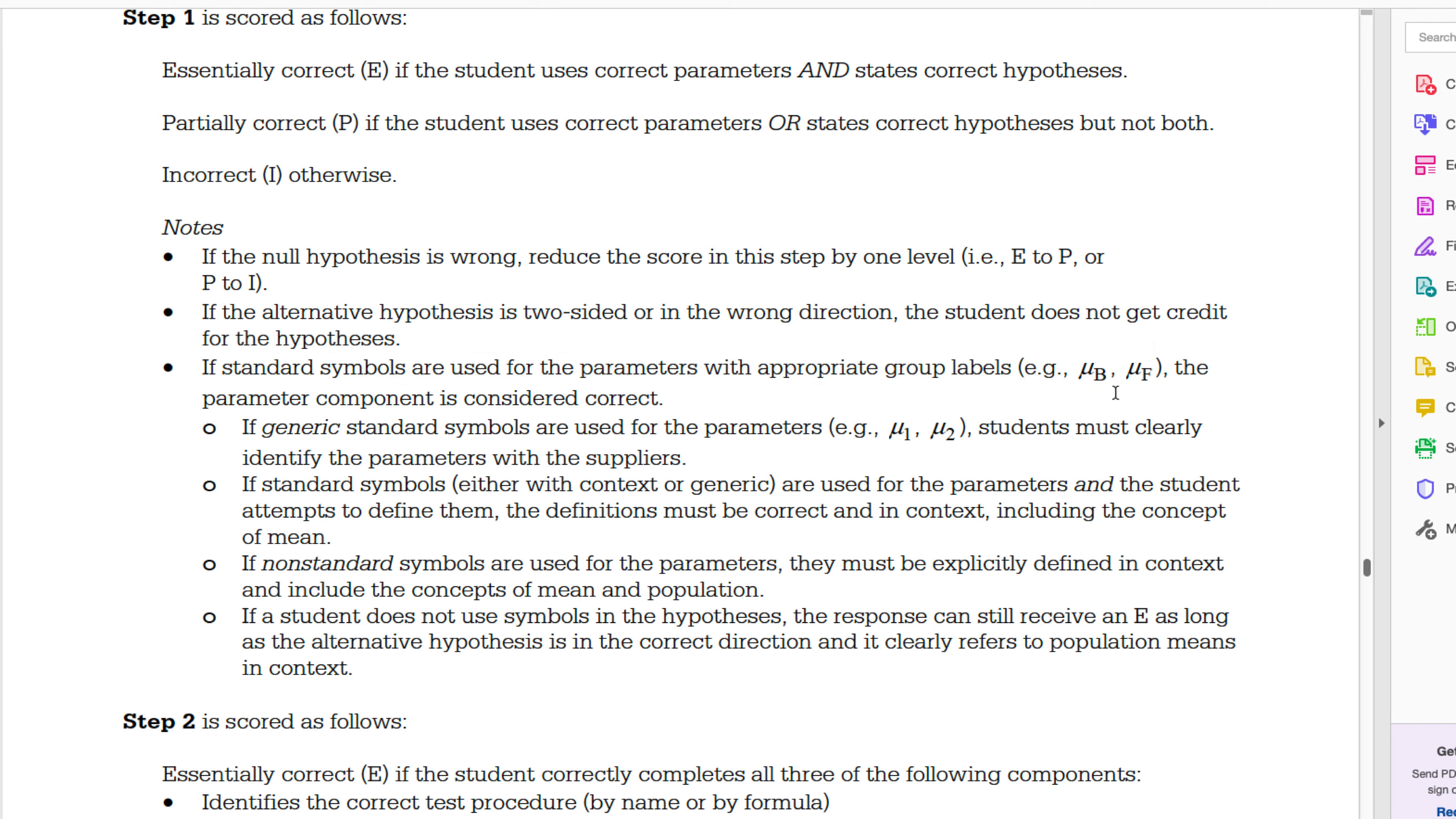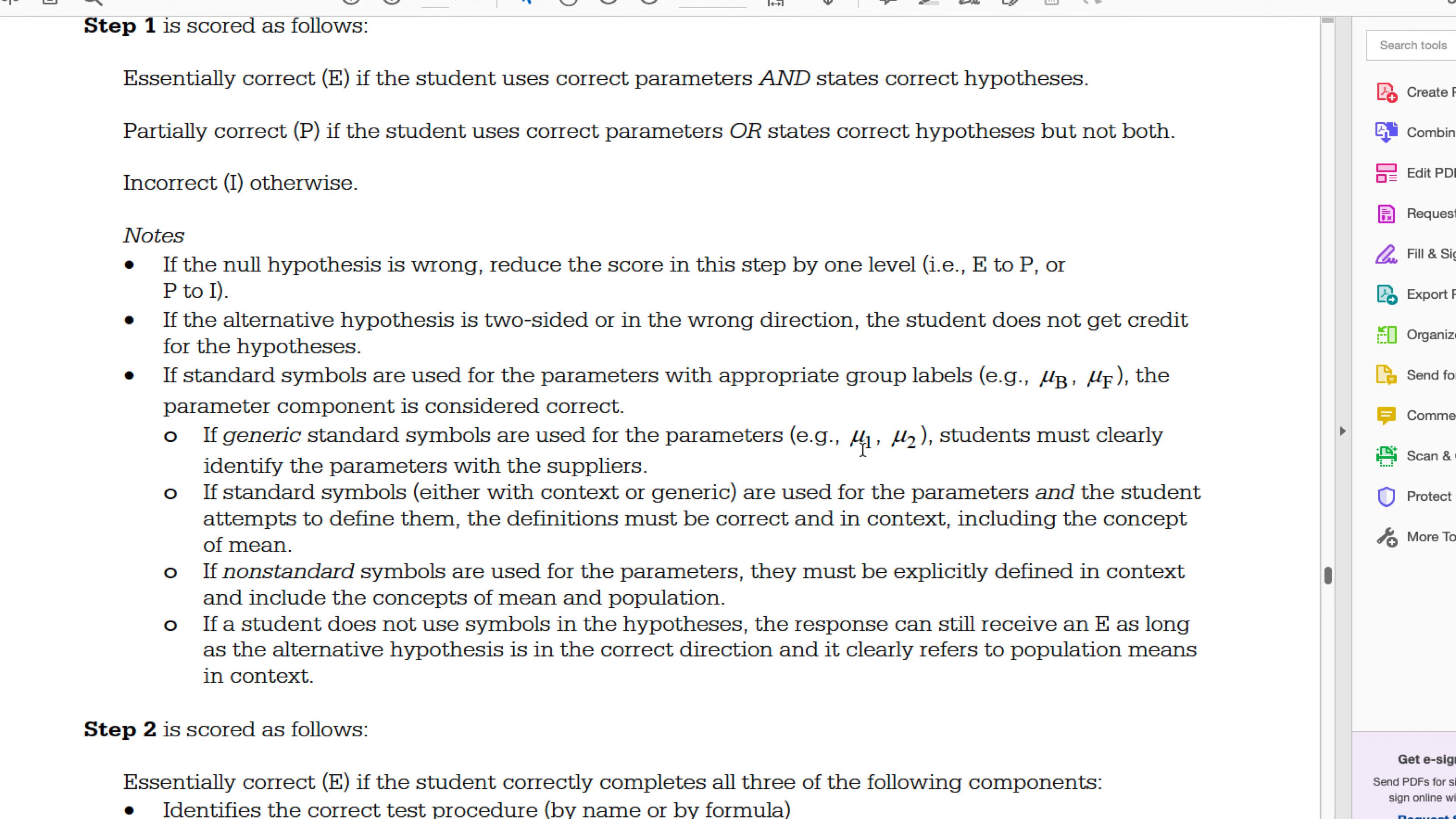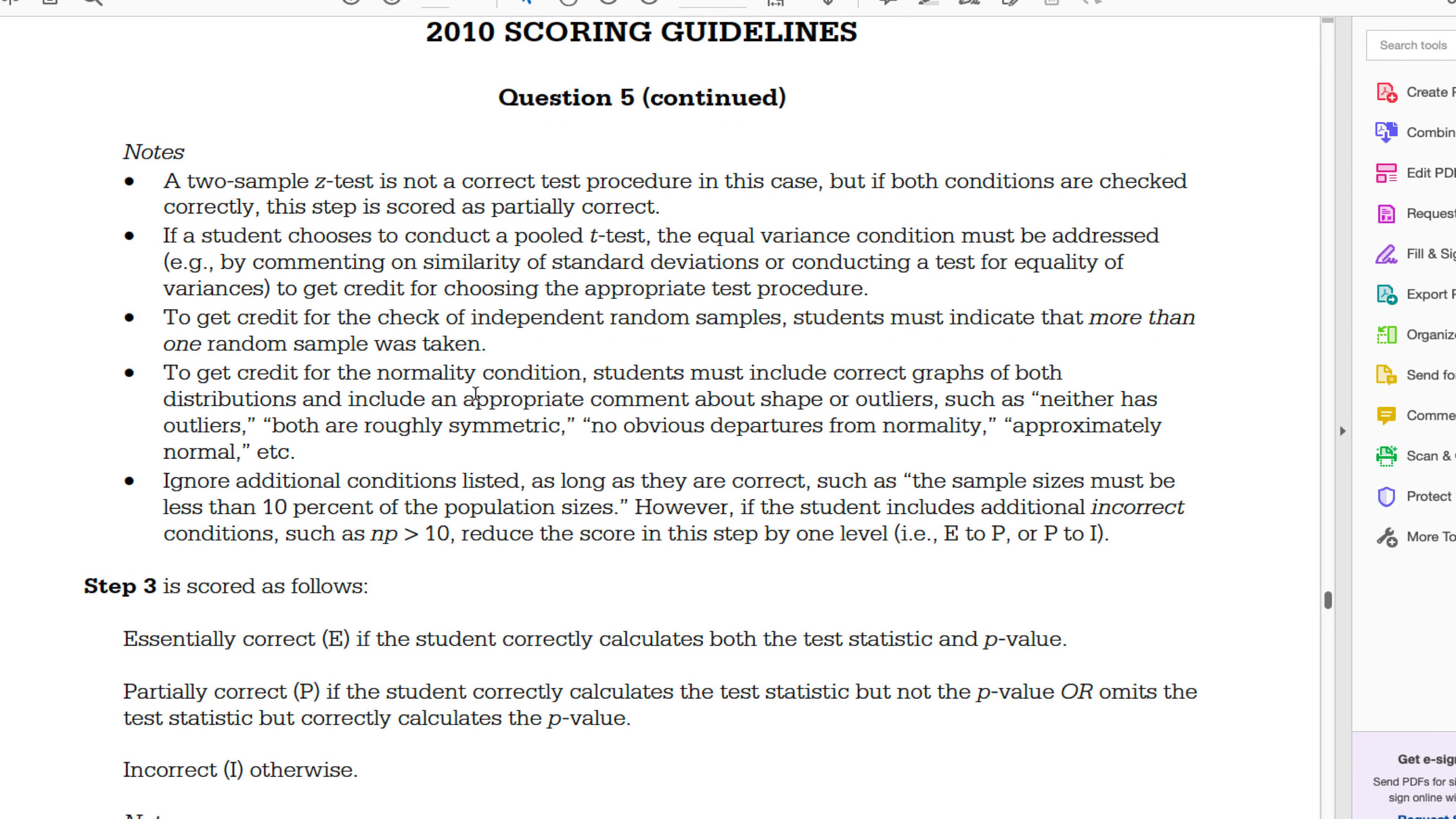Some notes: if the standard symbols are used for parameters, then the parameter component is considered correct. In other words, you're labeling things correctly. But if you use μ₁ and μ₂, which we use all the time because your calculator does it, you must clearly state which one is which. That's why I always kind of say, why don't you just use B and F? Next part: identifies the correct test procedure by name or by formula. We did by name, so we're good. Checks for independent random samples and normality. We did that, so we're good.